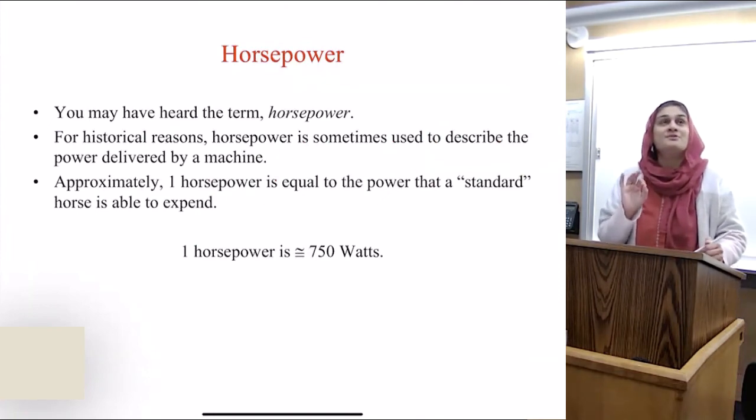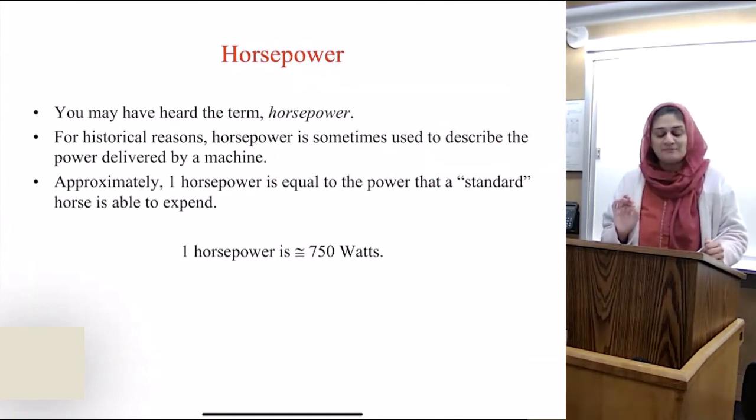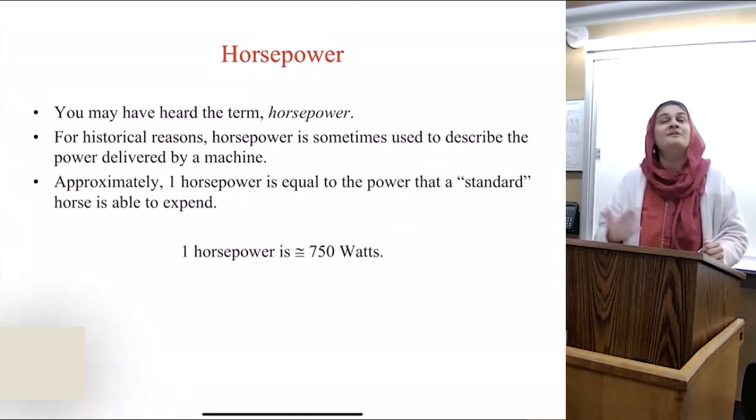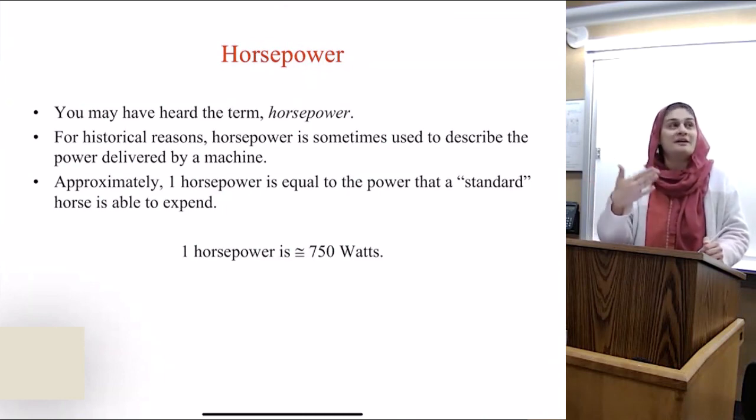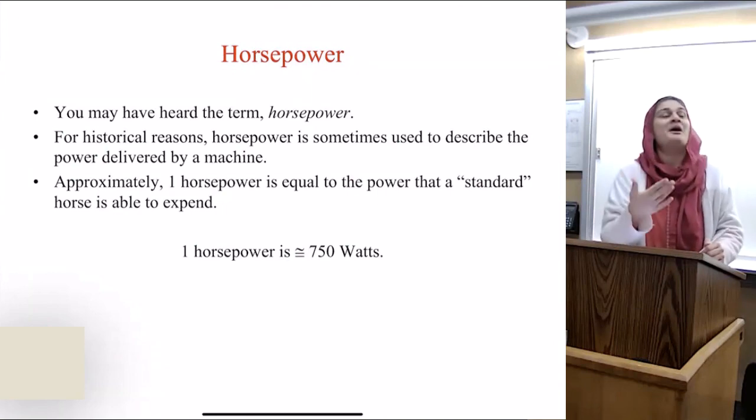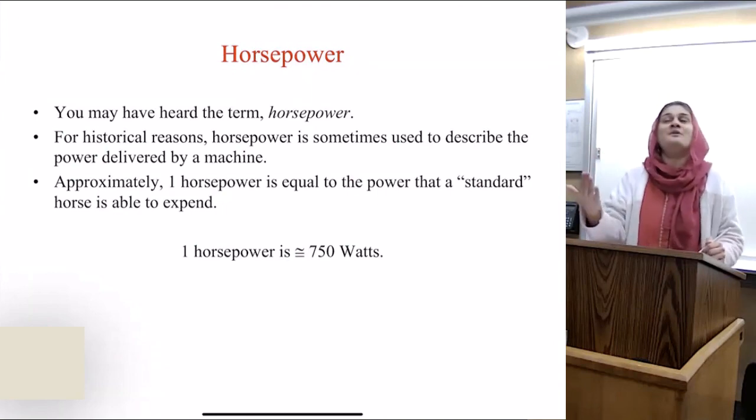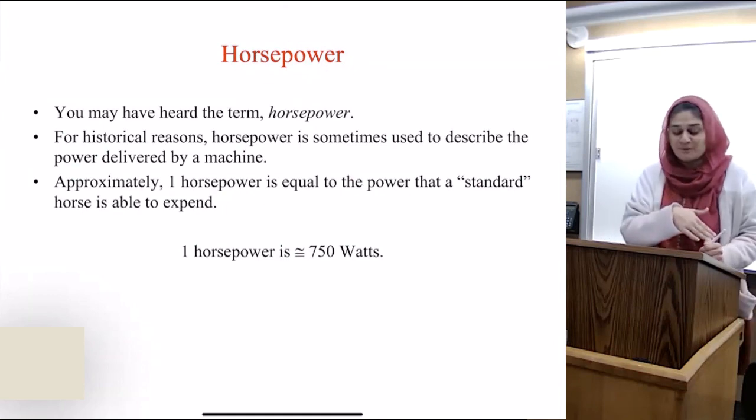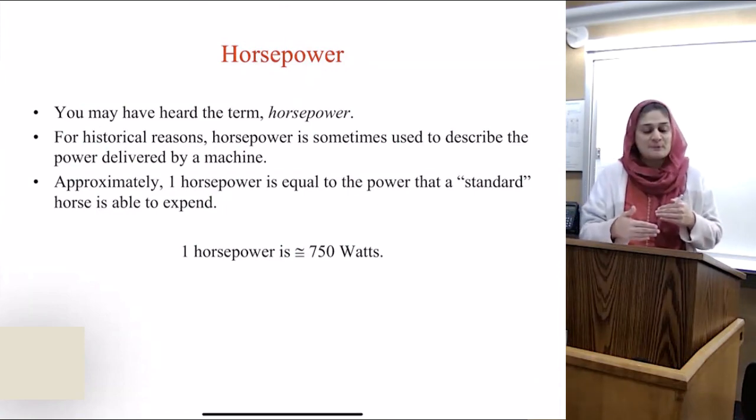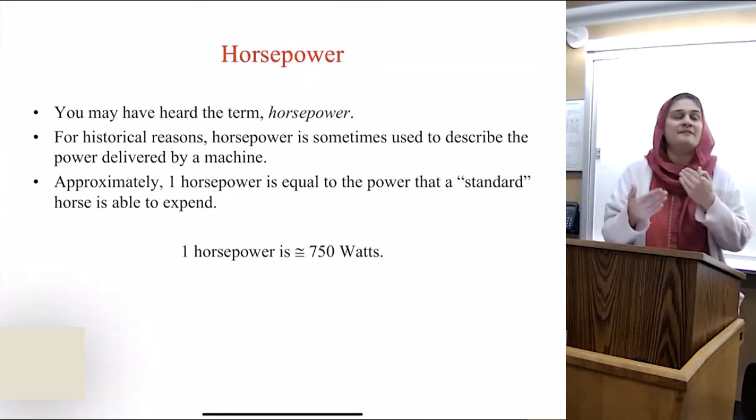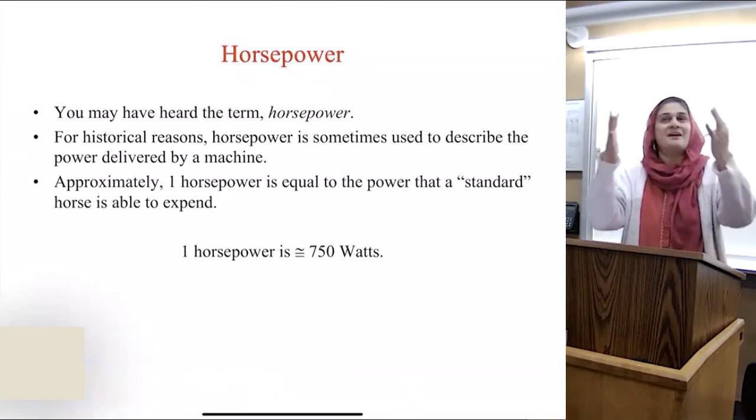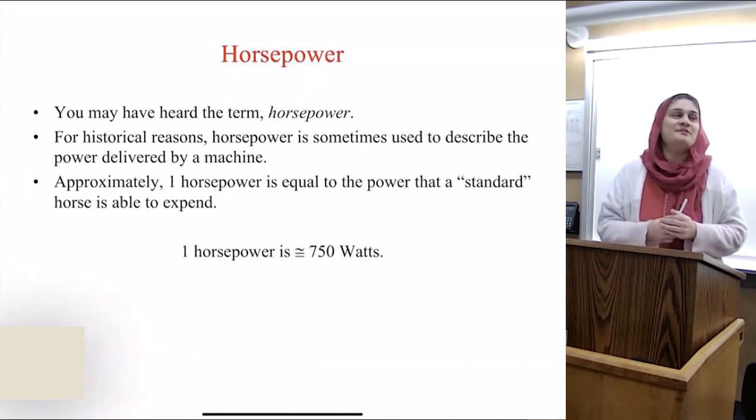So another term that's used for cars a lot is horsepower. Horsepower is about 750 watts. And historically, most car carriages or cart carriages were used by horses. So we've started to define the power that's in our cars as horsepowers. And usually what it was, was how much a standard horse is able to give us. So that's what a horsepower was. And we standardized it to 750 watts.